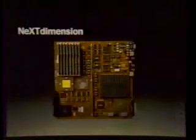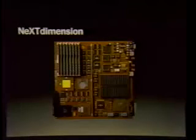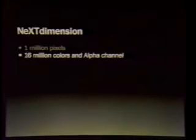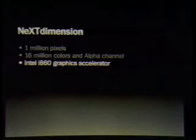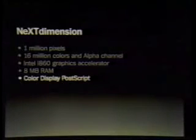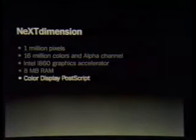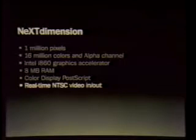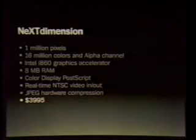So this is what our NeXT Dimension board looks like. Let me go through the features briefly. A million pixels. All 32-bits with alpha channel — that's the transparency that lets us see through the windows. An Intel i860 graphics accelerator. And every system comes with 8 megabytes of RAM, expandable to 32. Full color PostScript on every system — everything you've seen today has been drawn by color PostScript. Full NTSC and PAL video in and out. And full JPEG hardware compression at $39.95.